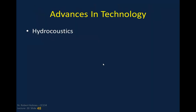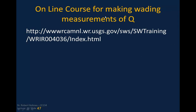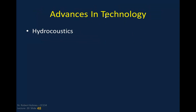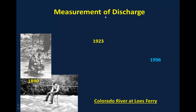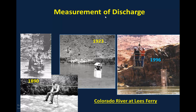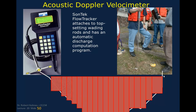The USGS has an online course on making wading measurements of discharge, accessible via a URL provided in the lecture. Technology has advanced significantly — flow measurements made in 1890 used the same technology as in 1996 (sounding weight and mechanical double-A Price current meter). In recent years, hydroacoustic technology has been developed that uses the Doppler principle to bounce sound off water particles and measure velocity.